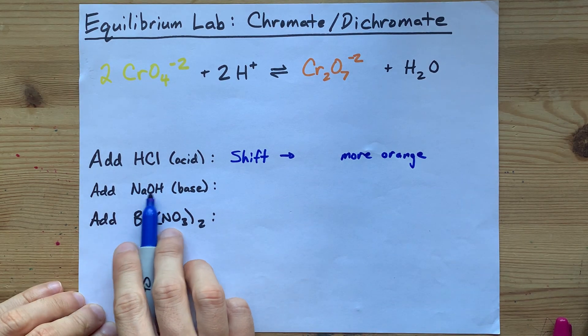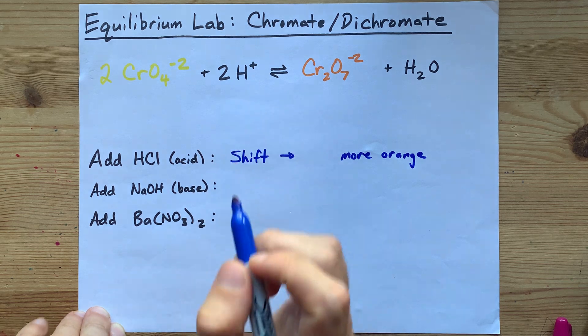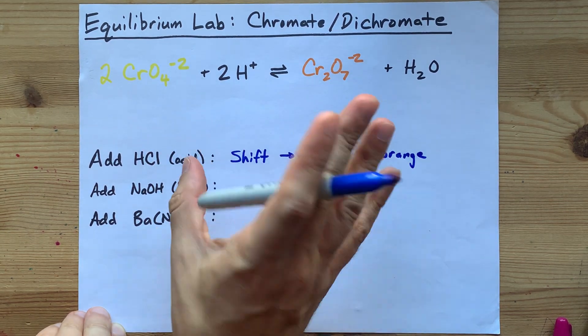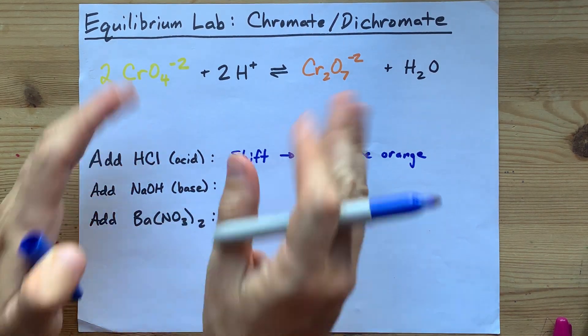Likewise, adding NaOH is going to have the effect of taking away H pluses. Bases and acids react together to neutralize. The OH and the H will react together to make water.